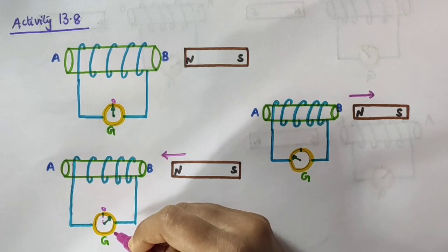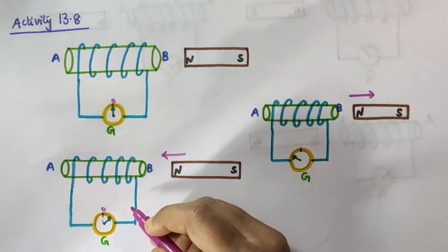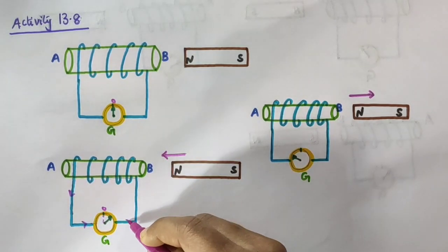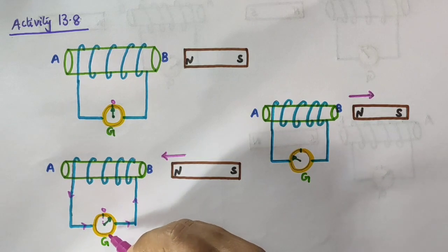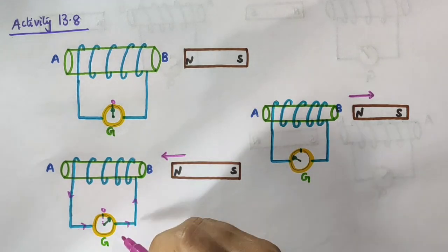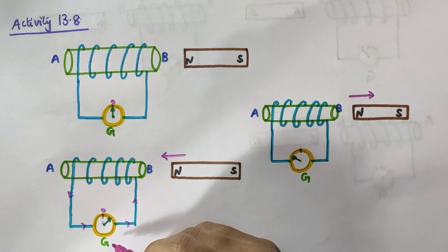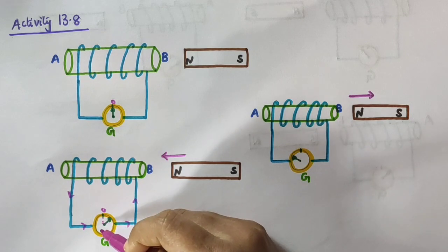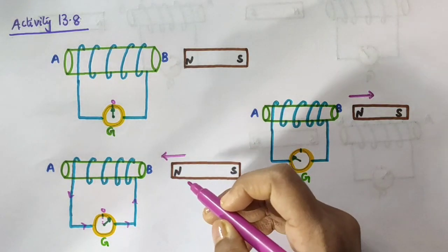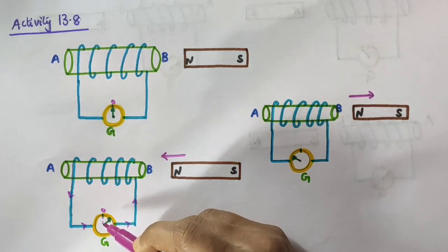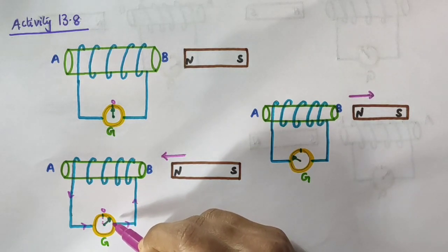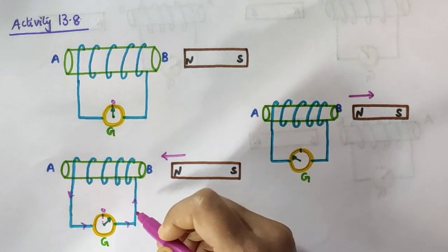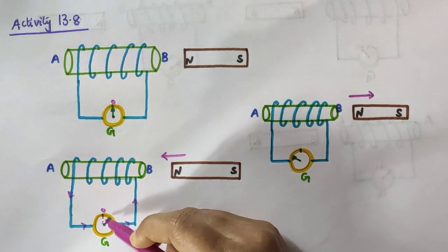The deflection in the galvanometer needle indicates the presence of a current in the coil — that is, some current is flowing through the coil. A galvanometer is an instrument used for detecting and indicating an electric current. The pointer remains at zero for zero current. Now when the motion of this magnet stops, the deflection becomes zero — the needle goes back to the zero point, the center of the scale.